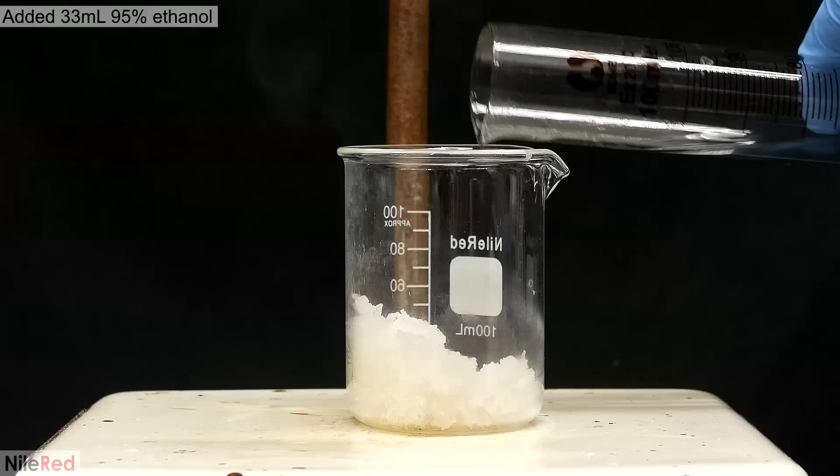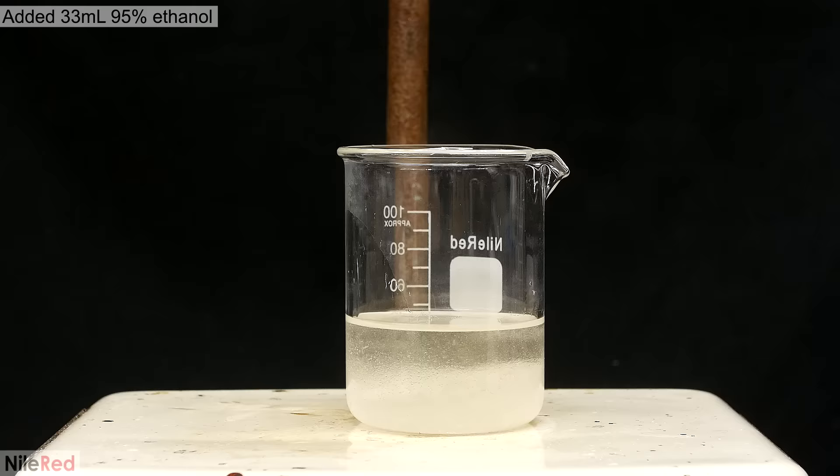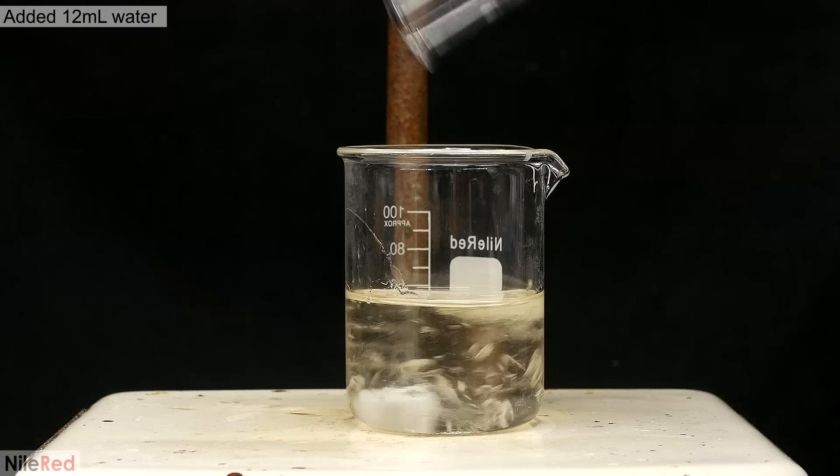To this I add some ethanol, and I turn on the magnetic stirring. Eventually, most of it dissolves, and I add a small amount of water to get rid of the rest.